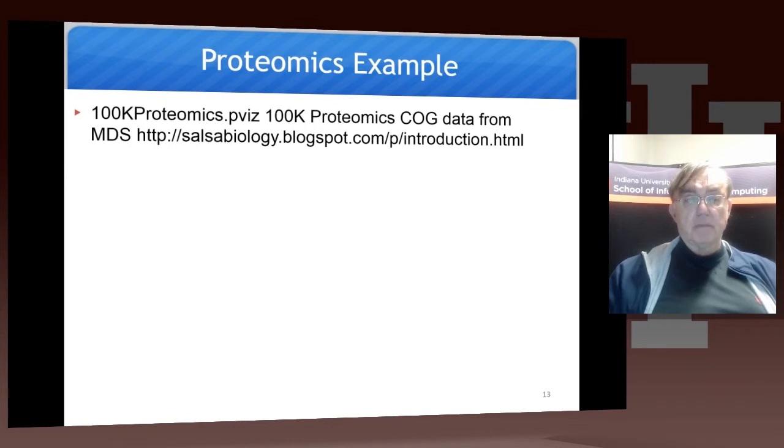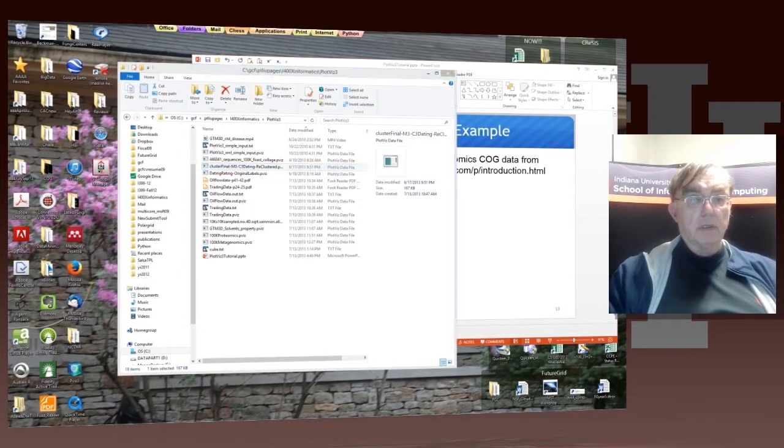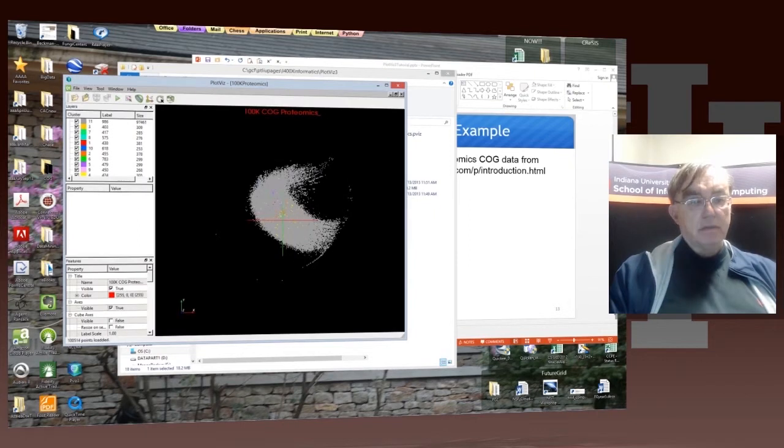Let's look at that for the full proteomics example. It's the same as we did the 10k proteomics points before, from the so-called COG data set. Now let's look at a much more effective 10 times bigger data set. And that's also on your resource. And it's called here 100k proteomics.pvis. It's just chucking up here, just to get going.